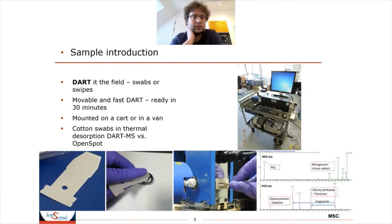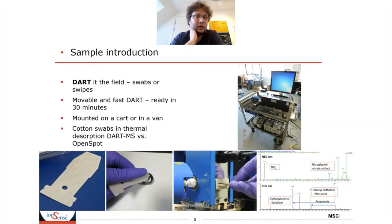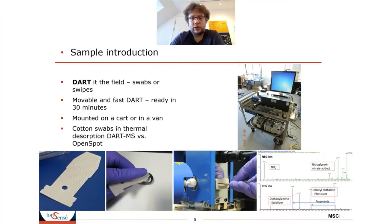The DART can be used in the field. You can use cotton swabs or the commercially available swipes that you also see used at the airport. The DART is movable — you can mount it on a cart and roll it around, or mount it permanently in a van and drive to the sites where you need to analyze samples. In the bottom picture you can see the thermal dissolver with a cotton swipe being inserted and analyzed, as well as examples of an explosive analyzed in negative and positive ion mode.